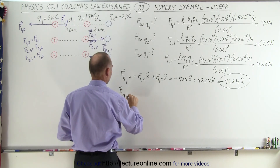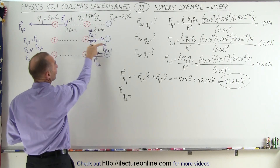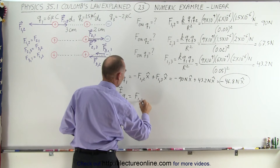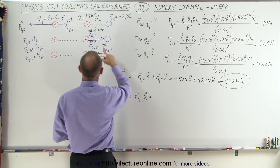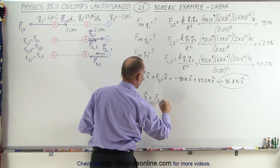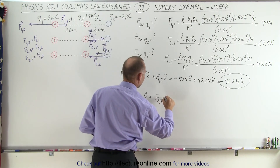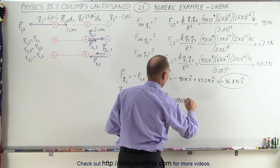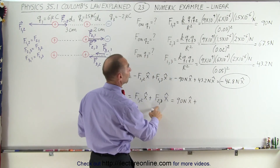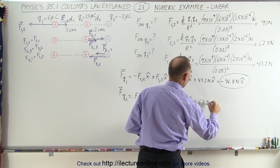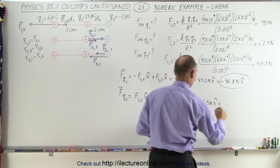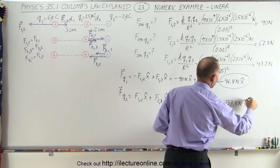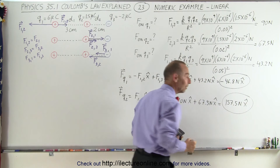The force on Q2: we see that both forces on Q2 are to the right, so we have F21 in the x direction plus F23 in the x direction, which equals 90 newtons plus 67.5 newtons in the x direction, giving us 157.5 newtons in the x direction. That is the force on the middle charge due to the presence of the two outside charges.